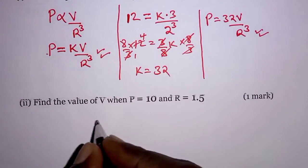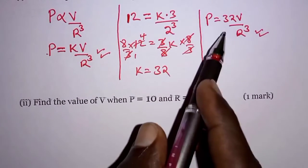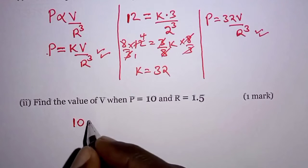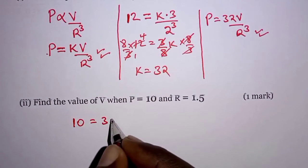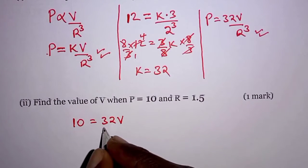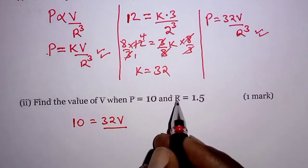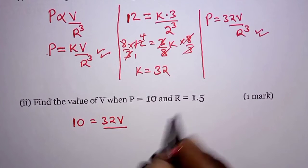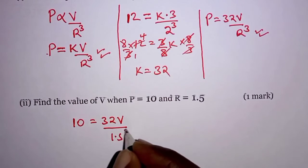So P is 10, so substituting here, we have 10 is equal to 32 V, remember V is unknown now, and then we divide by R cubed, and R is 1.5, so we have 1.5 cubed.